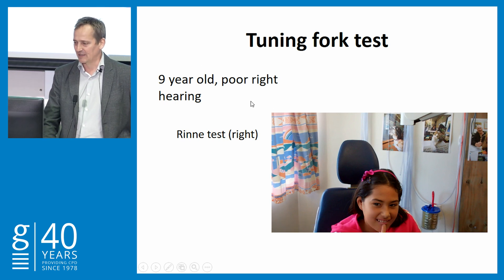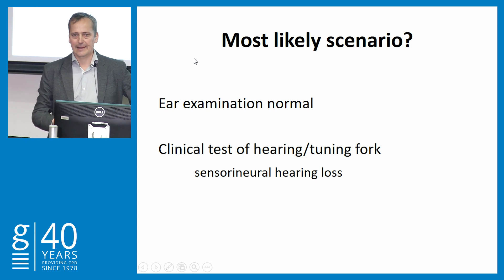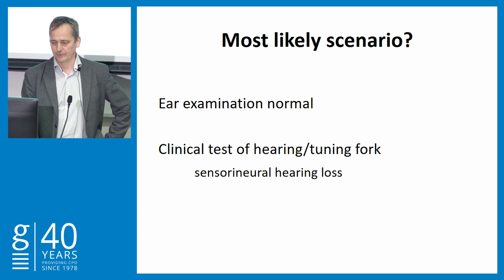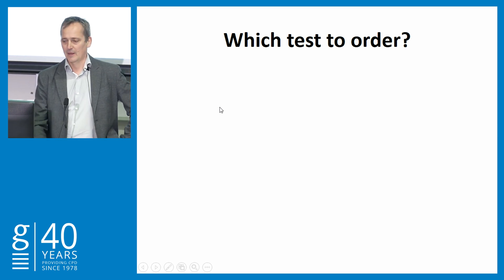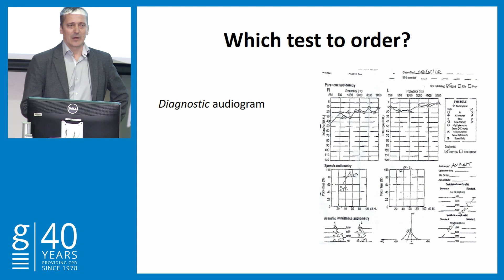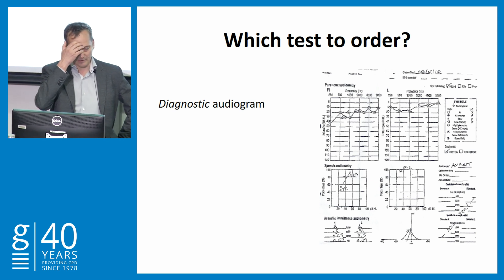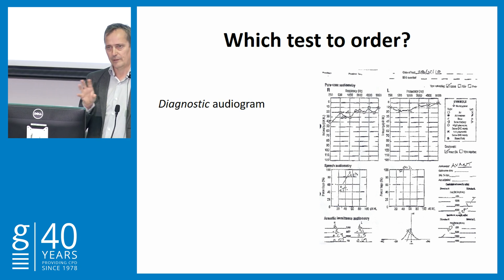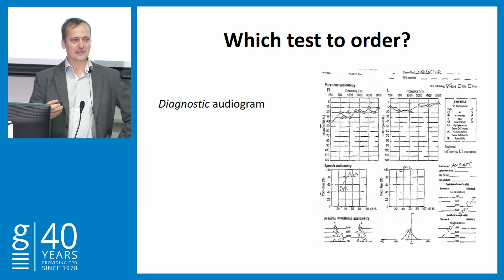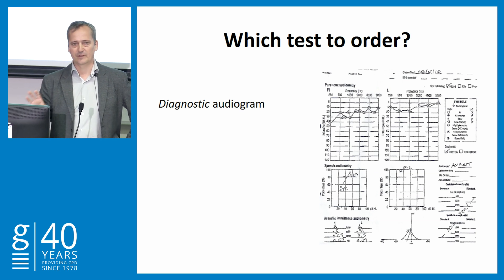So this patient had a conductive hearing loss. Now, forgetting about all the red flags and going back to the normal scenario: you've done your ear examination, clinical test of hearing, and tuning fork testing, and you've found a sensorineural hearing loss — what's next? You want to confirm the hearing loss, and the first thing you need is a diagnostic audiogram. A diagnostic audiogram is the only audiogram that will tell you whether it's conductive or sensorineural. Screening audiograms from some audiologists will not give you that information.